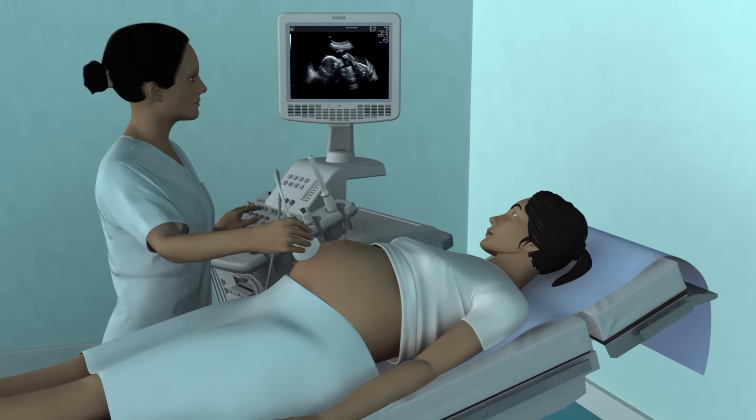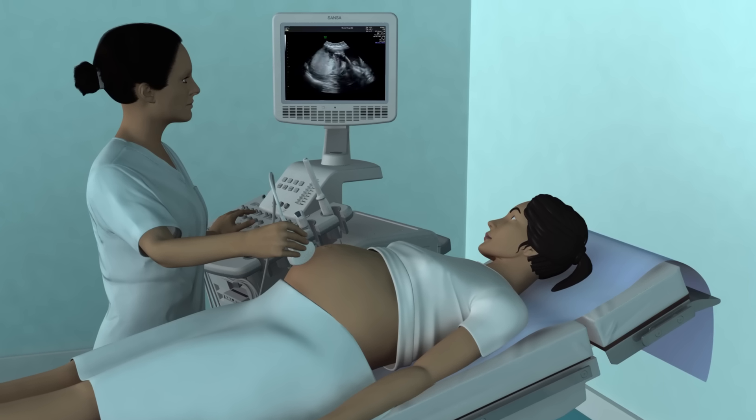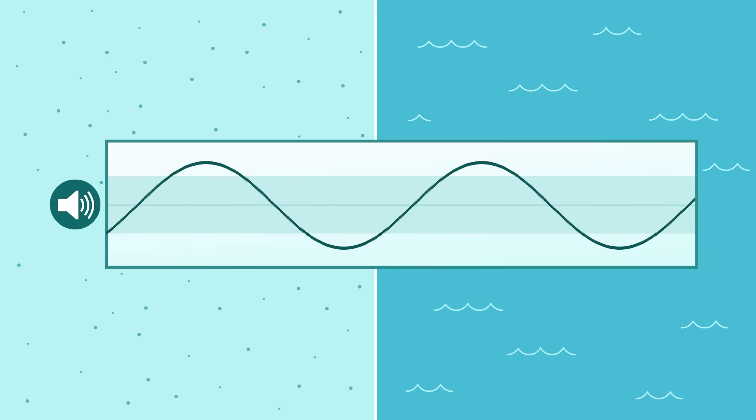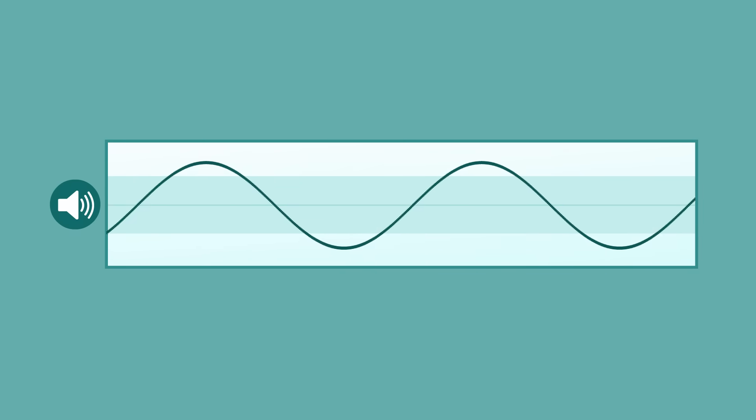Sound is produced by the vibration of molecules within a medium, such as air or water. Sound travels through different mediums as waves of pressure and is characterized by its frequency, which is measured in units called hertz.